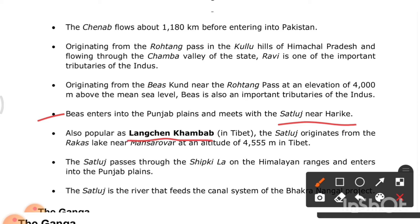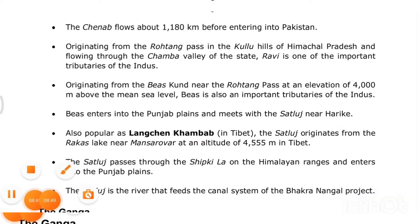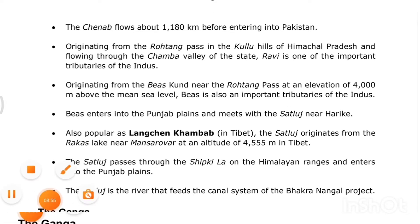The Sutlej, also known as Langchen Khamban in Tibet, originates from the Rakas Lake near Mansarovar at an altitude of around 4,555 meters. It passes through Shipki La on the Himalayan ranges and enters the Punjab plains. The Sutlej feeds the canal system of the Bhakra Nangal project.